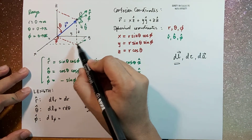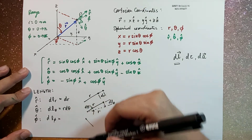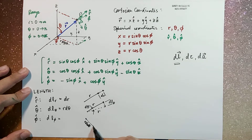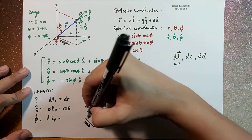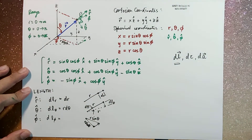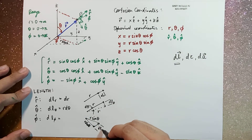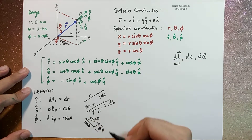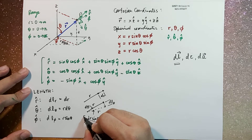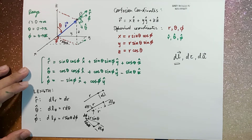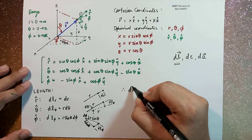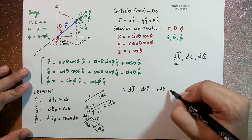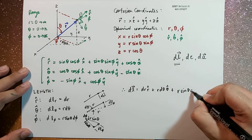Lastly, in the phi-hat component, the infinitesimal length along that direction — remember this is r sine theta — so if this is r sine theta and then this point moves along the direction of phi-hat, this infinitesimal length dl-phi is also an arc length, so that means it's r sine theta d-phi. Therefore, dl is given by: dr r-hat plus r d-theta theta-hat plus r sin-theta d-phi phi-hat.